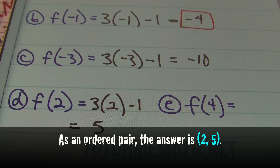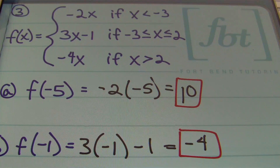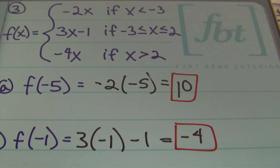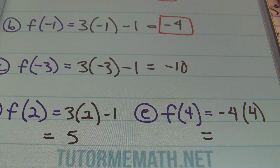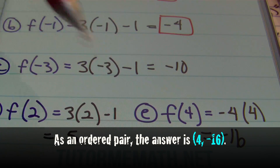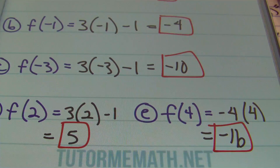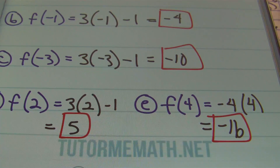For part e, we plug in four for x. Positive four is greater than two, so we use the third part of the function: negative four x. Rewriting: negative four times four, which equals negative sixteen. Those are the answers for parts c, d, and e of problem three.